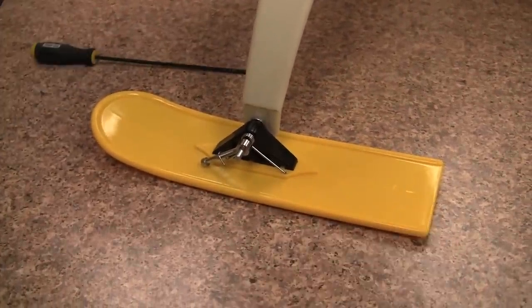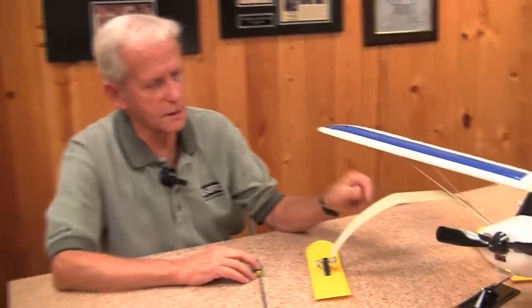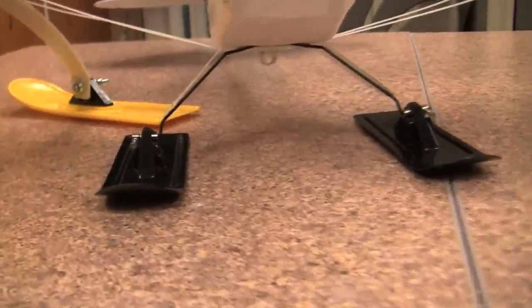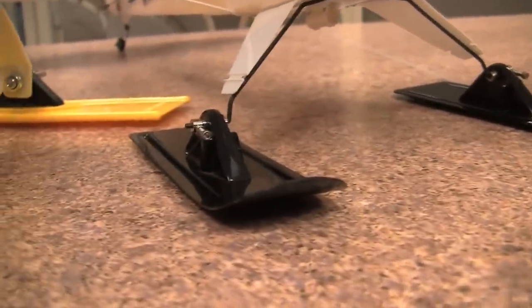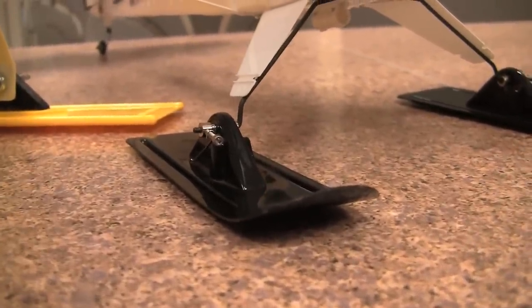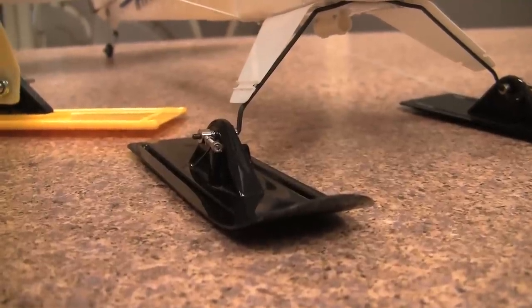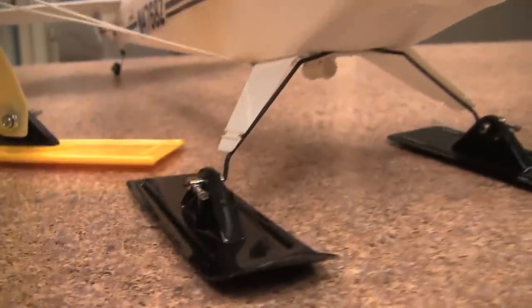Now we also have another set of skis for snow flyers and little foamies. The exact same principle is done there as well as on the large ski. The spring system is the same. It's just smaller. Get out there, get on that snow and ice and have a lot of fun.